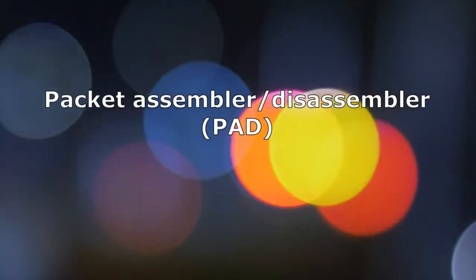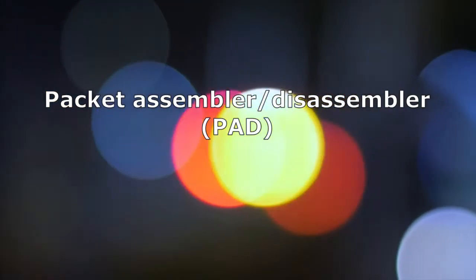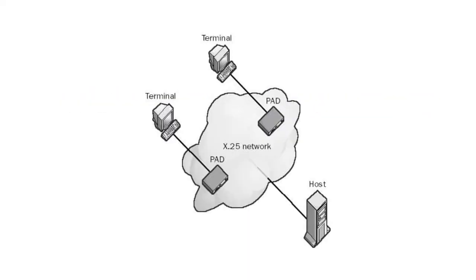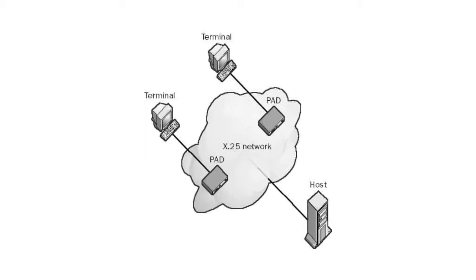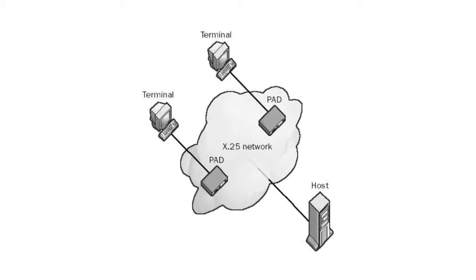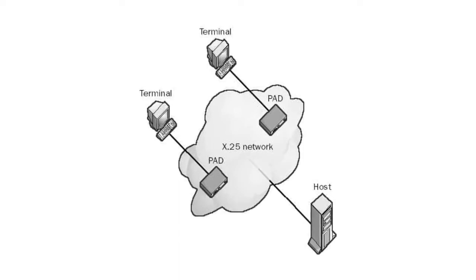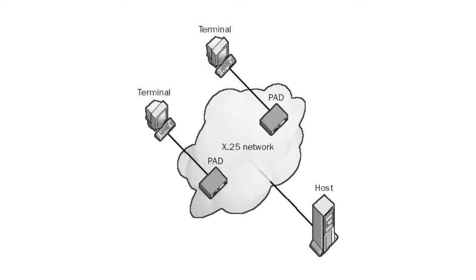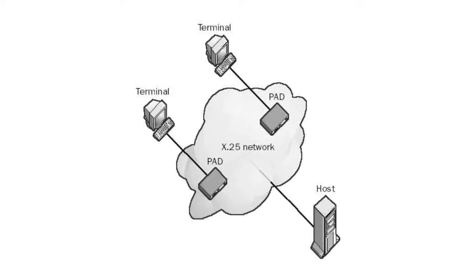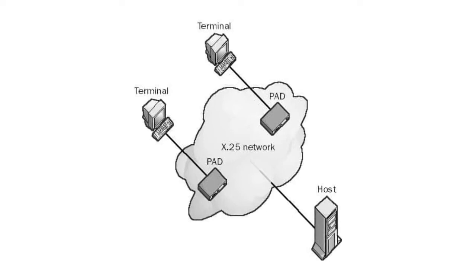A Packet Assembler Disassembler is a telecommunications device that breaks a data stream into individual packets and formats the packet headers for asynchronous transmission over an X.25 network. It also accepts packets from the network and translates them into a data stream. Packet Assembler Disassemblers are a form of data communications equipment for connecting asynchronous data terminal equipment, such as computers and dumb terminals, to the X.25 packet switching service.